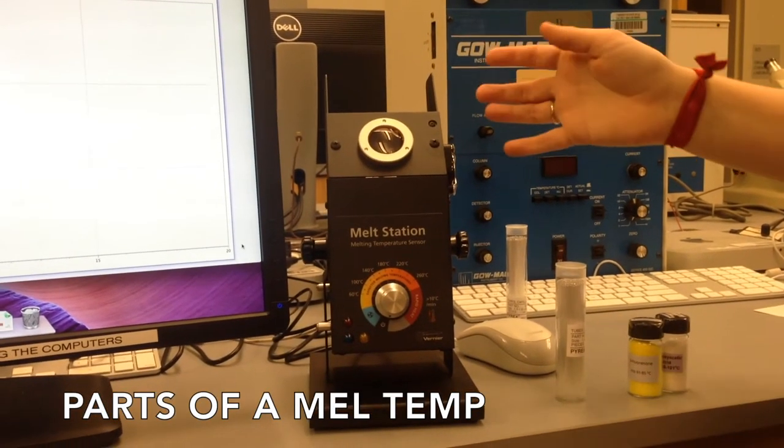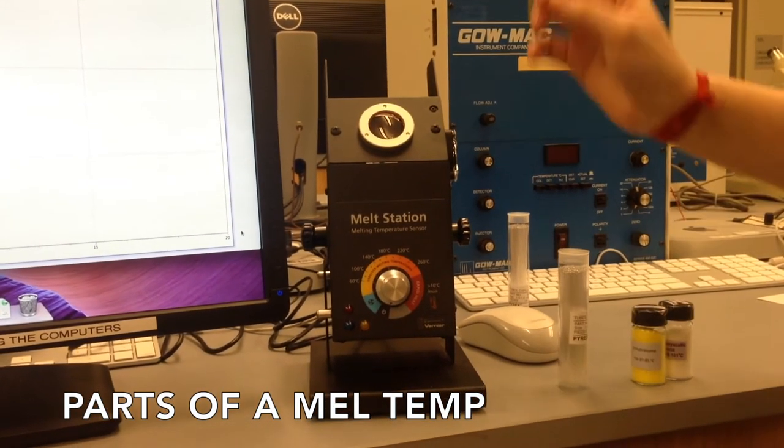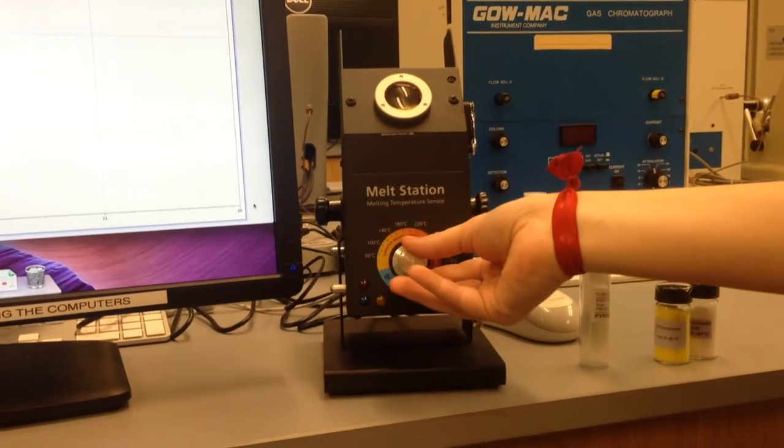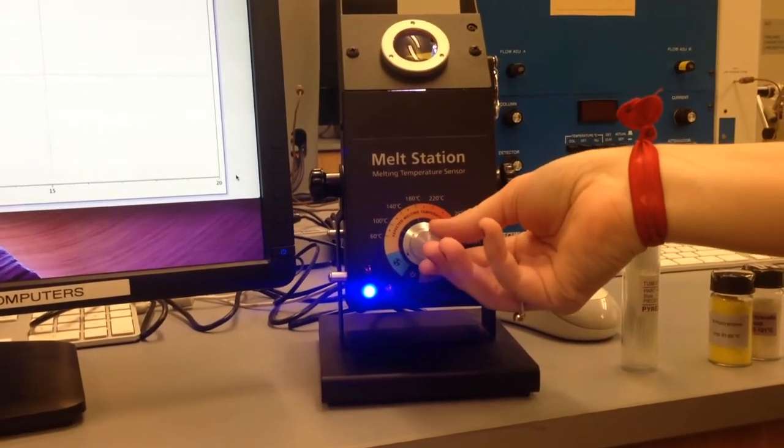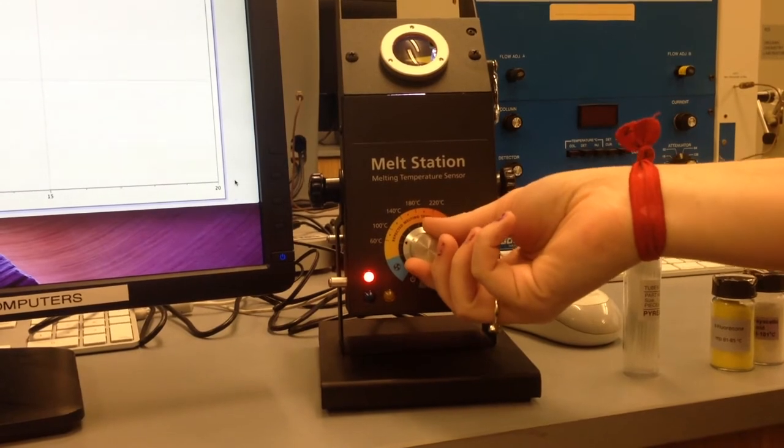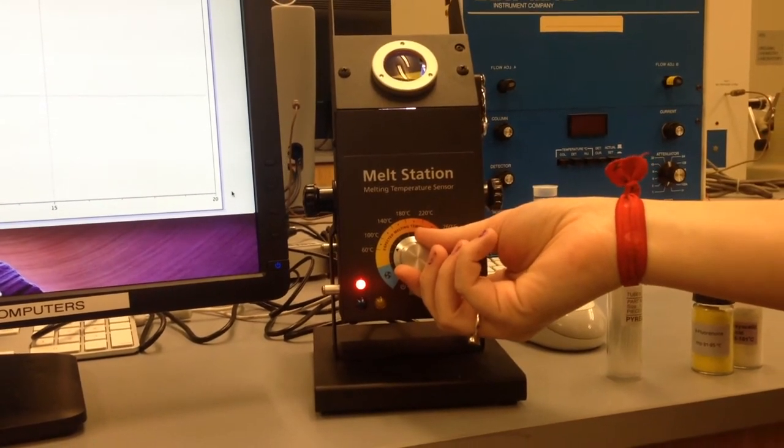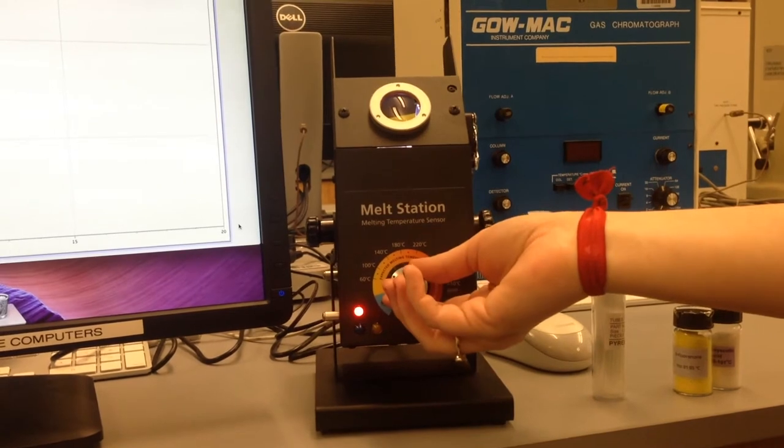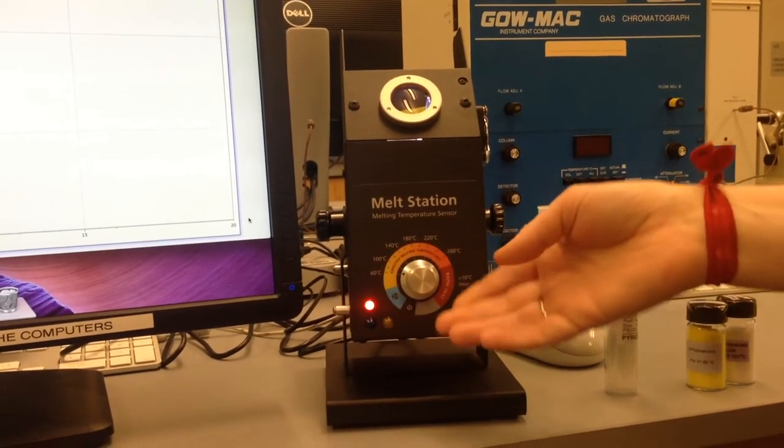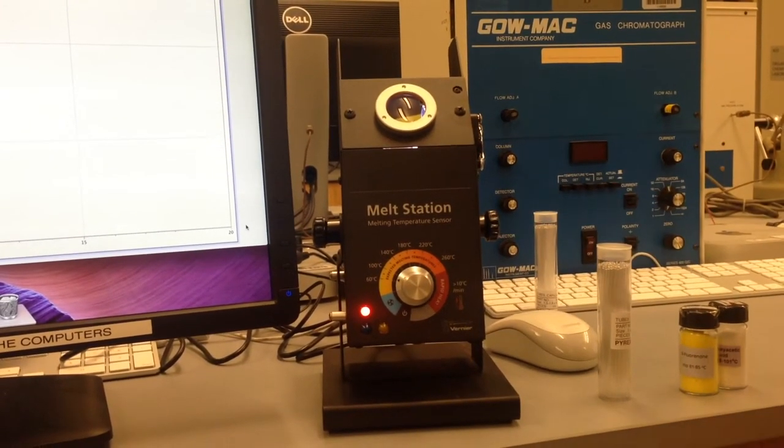Meltemps consist of several parts. Most apparatuses have an on-off switch plus a voltage dial. This one is all-in-one and you just turn on the voltage dial to turn the apparatus on. You can use the dial to adjust how fast the apparatus heats up. If you want it to heat up more than 10 degrees Celsius per minute, you can turn it all the way to rapid heat.